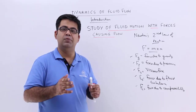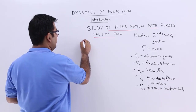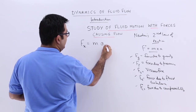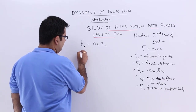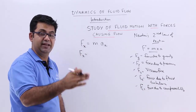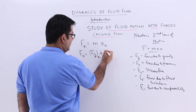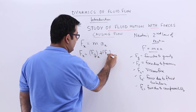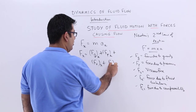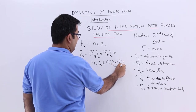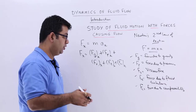Now let us say we are having fluid motion in a particular direction — let's say the x-axis direction. You will have the force in the x-axis as m into the acceleration component in the x direction. So the total force in the x direction would be the sum of all these forces in the x direction: the gravity force component Fg(x), the pressure force component Fp(x), the viscous force component Fv(x), then Ft(x) and Fc(x). This is the total force that can act during a fluid flow in the x direction.